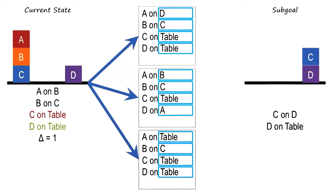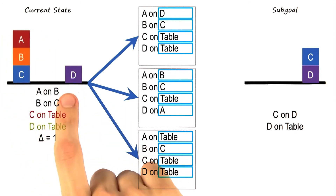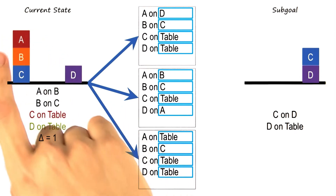David, how did you fill up these boxes? So there are three possible moves here: A on the table, A on D, or D on A.